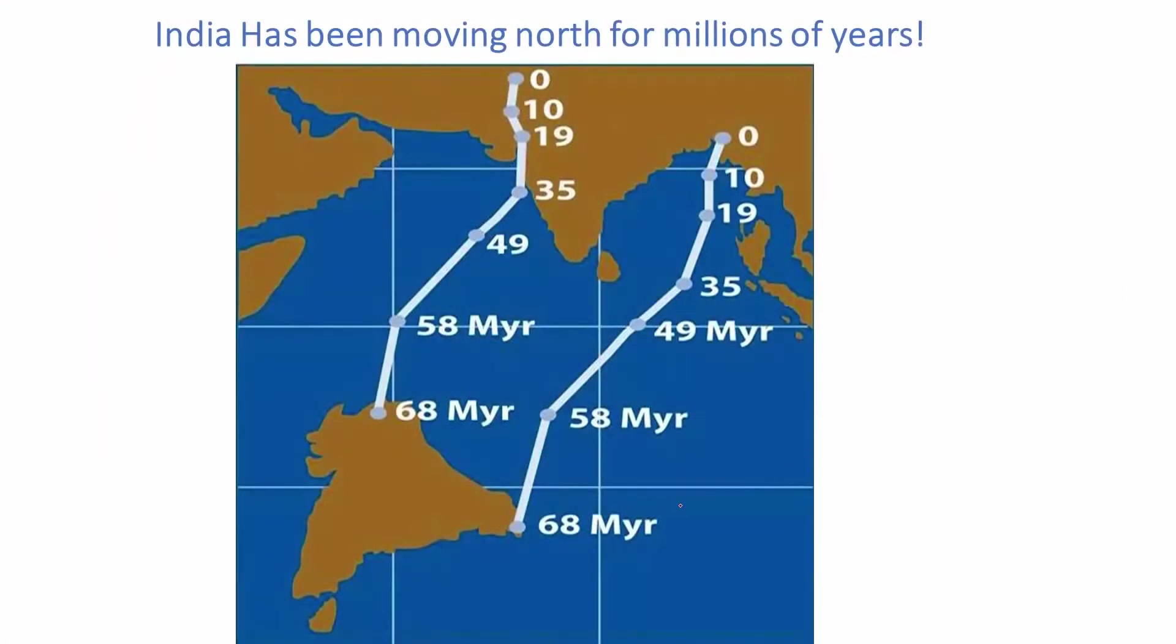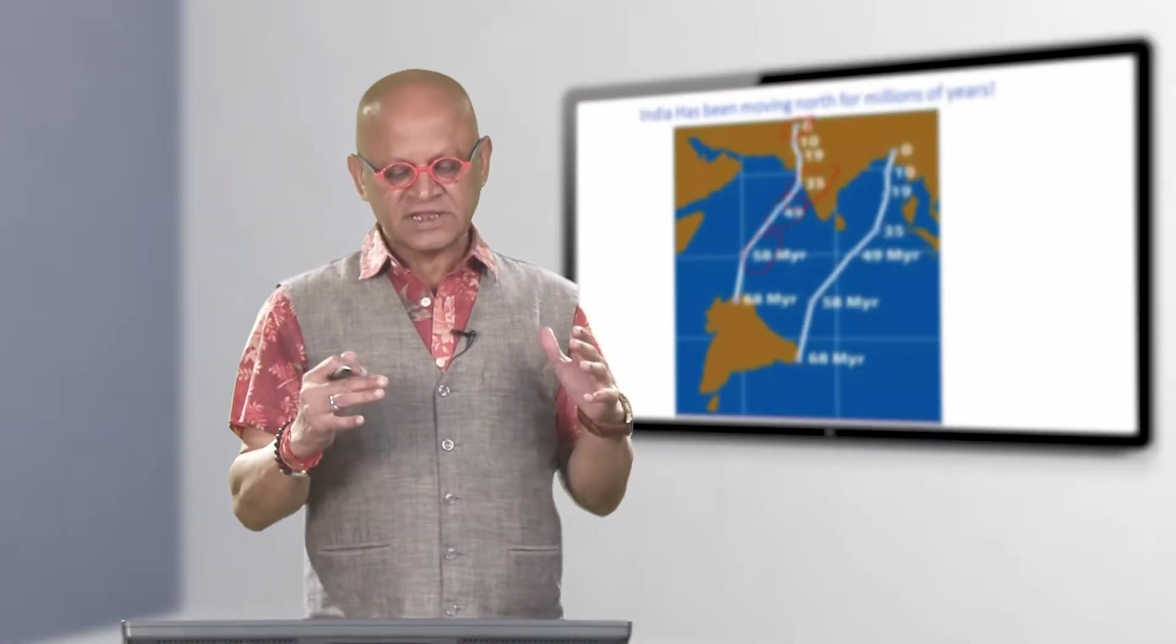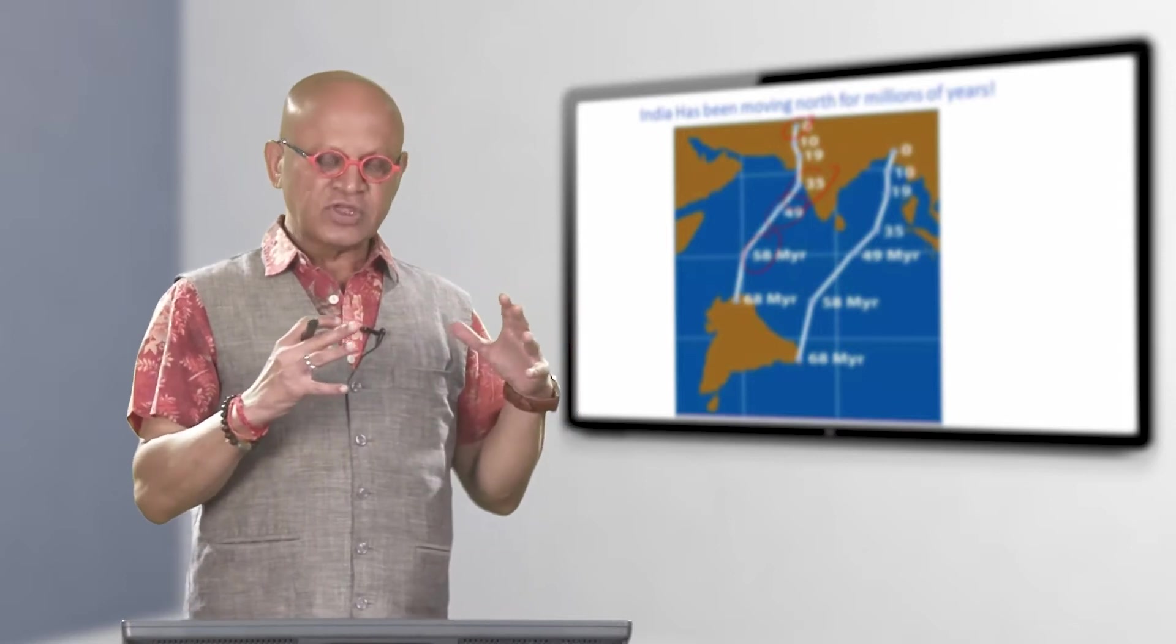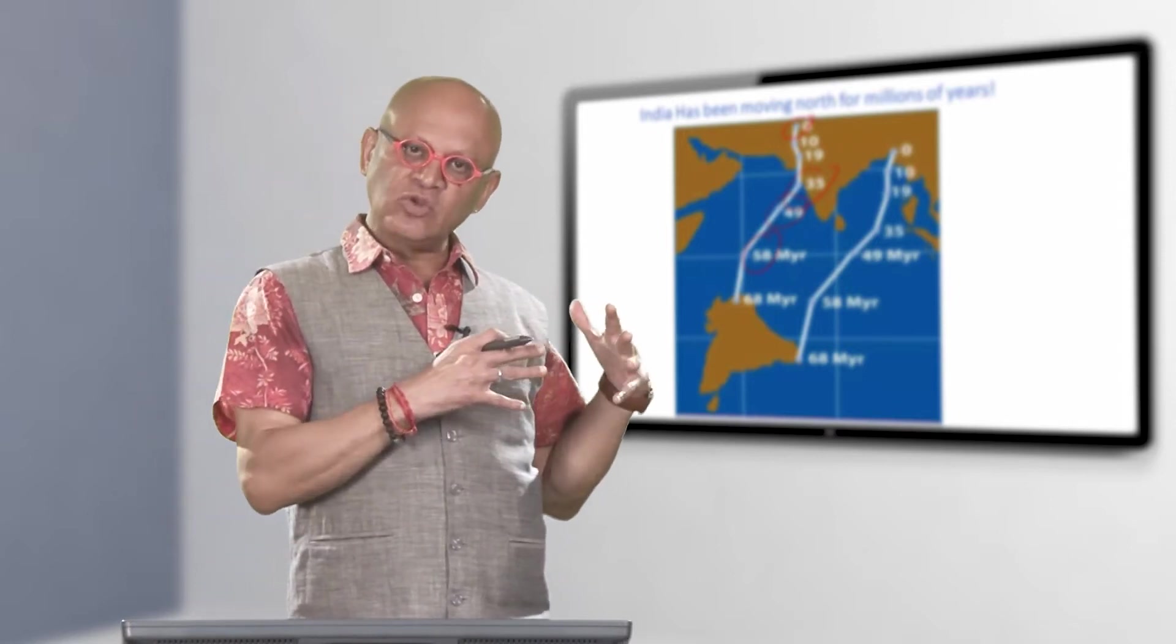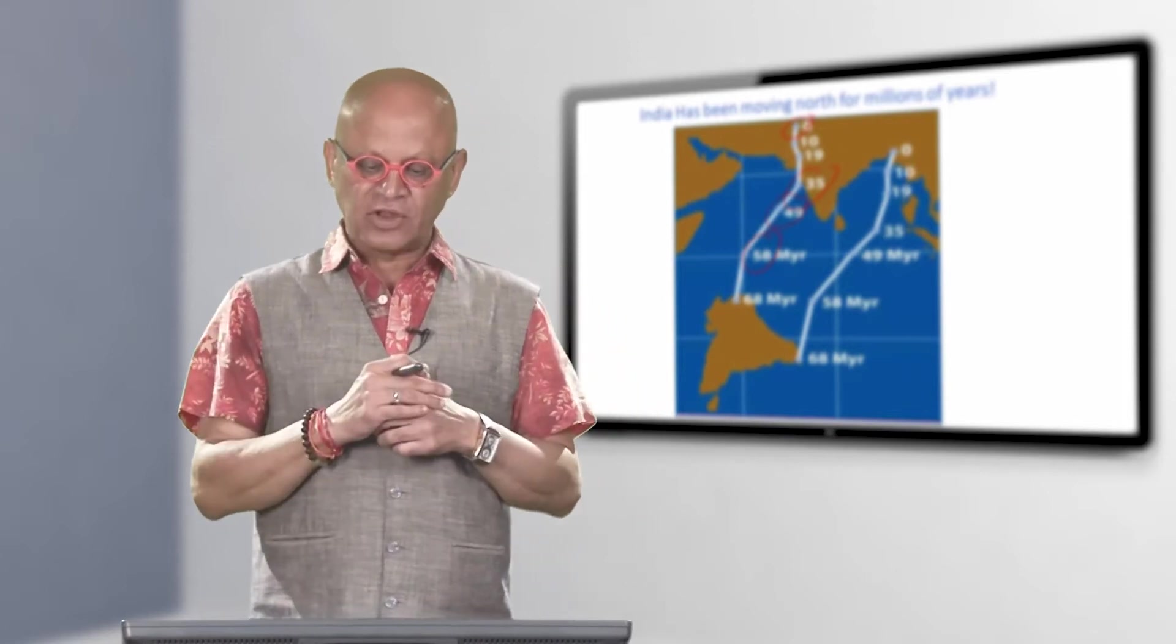Here is a figure showing India south of the equator about 70 million years ago. It has slowly drifted as shown by the times on the map: 58, 49, 35 million years ago, and so on. Zero is the present period. We know that India was south of the equator by looking at certain rocks and the magnetic lines on them.